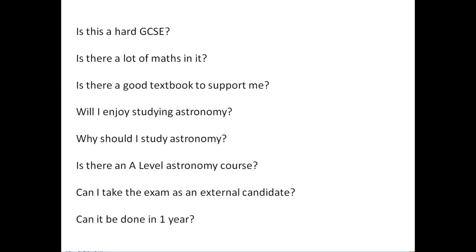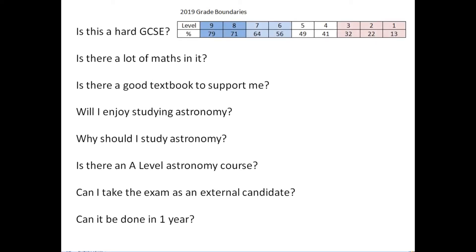Is it a hard GCSE? All GCSEs are hard — it depends what level you're hoping for. For levels eight and nine, the grade boundaries from 2019 were 71% and 79%. Some questions are hard; I've taught A-level physics for 35 years and some questions I find pretty tricky. But for a pass grade of 41%, there are quite a few straightforward questions, and it's not impossible to pass if you're willing to work hard.